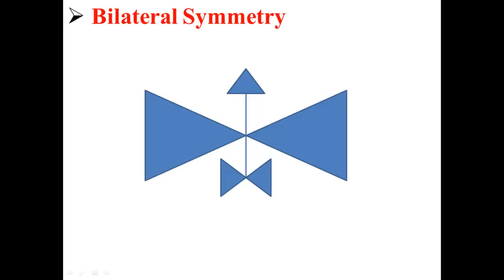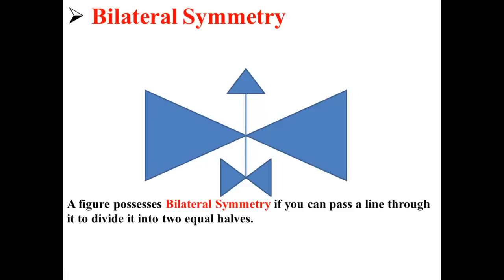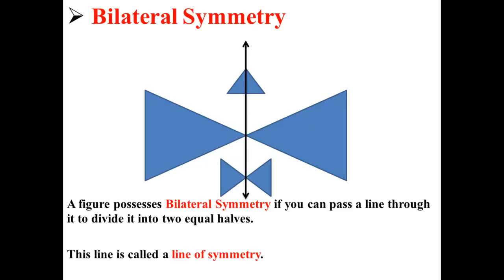In this lecture I'm going to talk about bilateral symmetry. Here we have a random figure that I've just drawn. A figure possesses bilateral symmetry if you can pass a line through it and divide it into two equal halves. Here I'm going to pass a black line straight through the middle vertically, and you can see that it gives us two equal halves. That means this figure possesses bilateral symmetry. This line is called a line of symmetry.